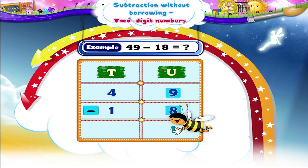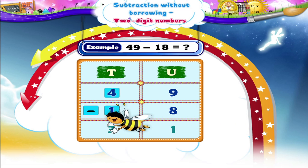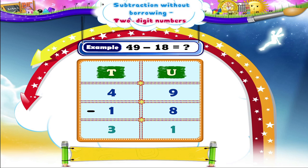Next, we subtract the digits in the tens place. So, 4 minus 1 gives 3. Hence, 49 minus 18 is equal to 31.